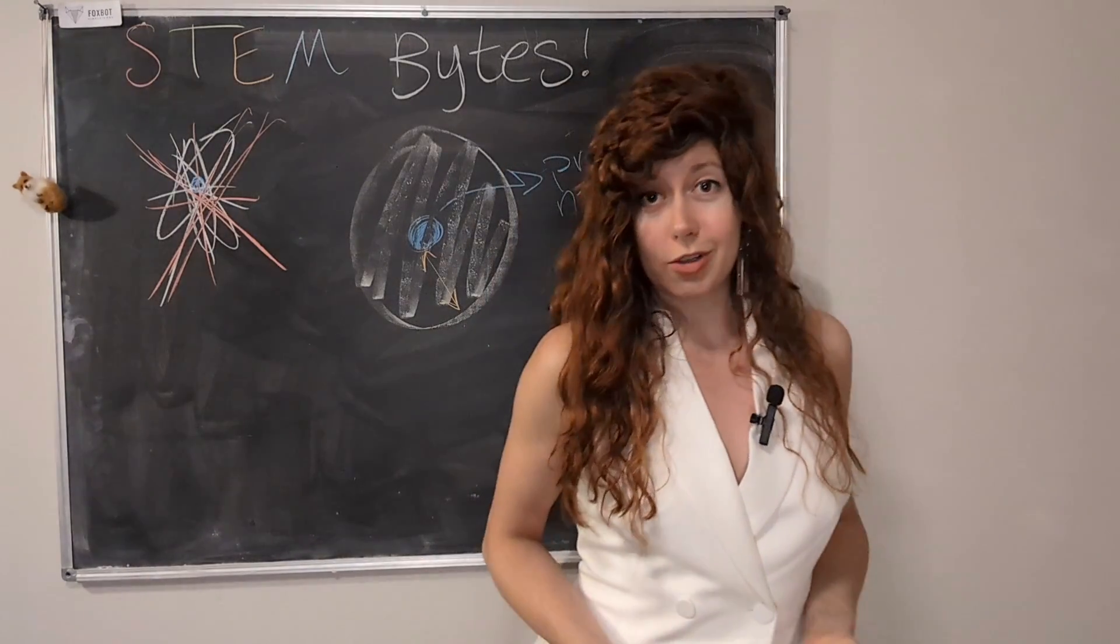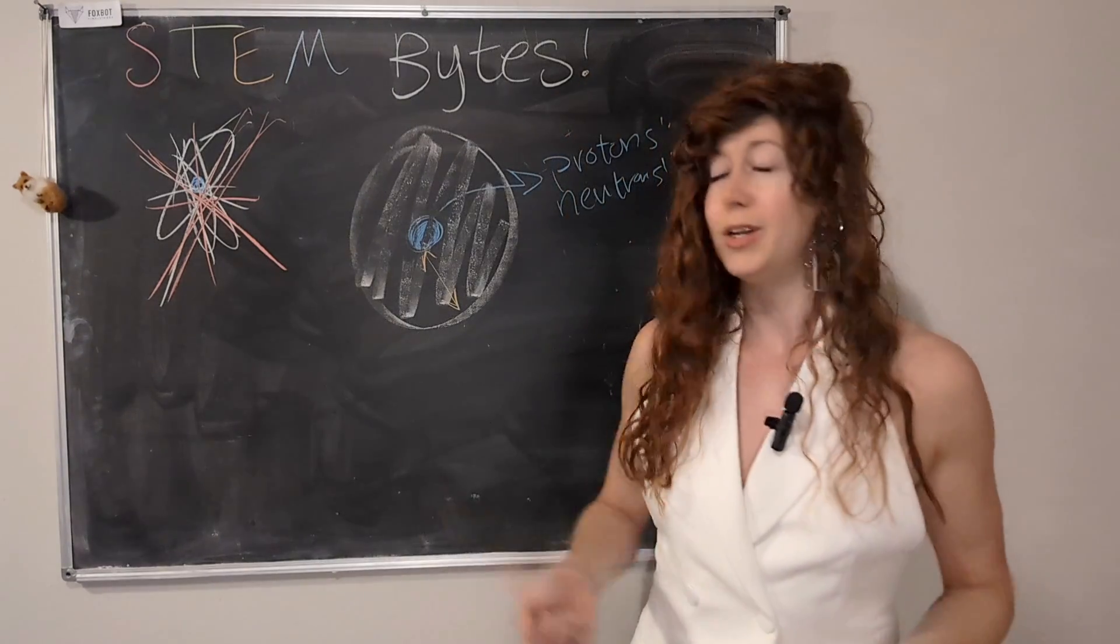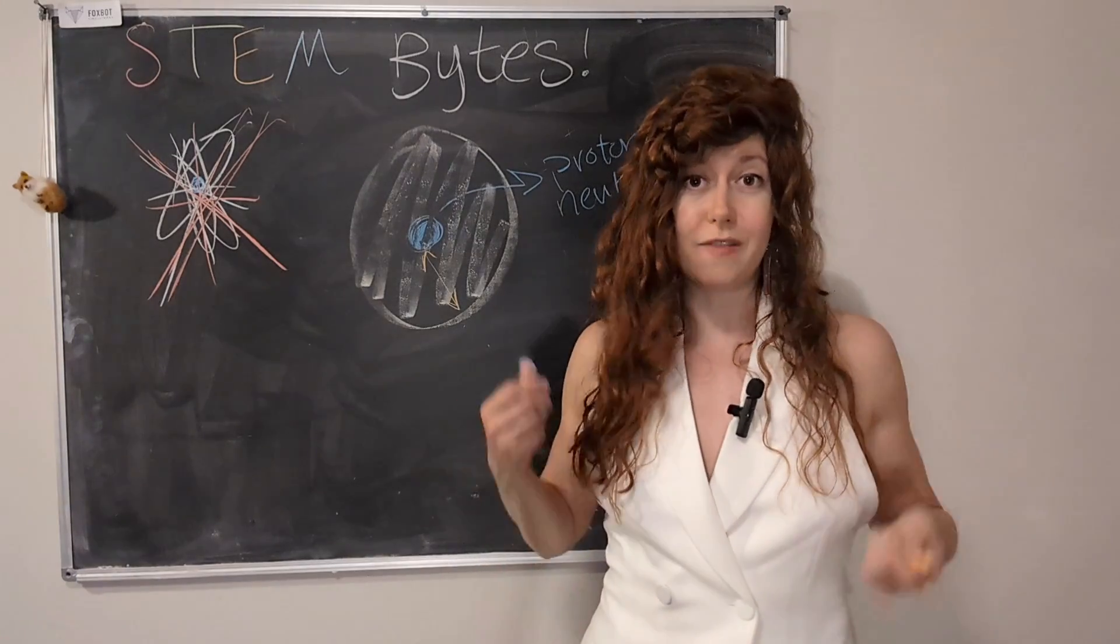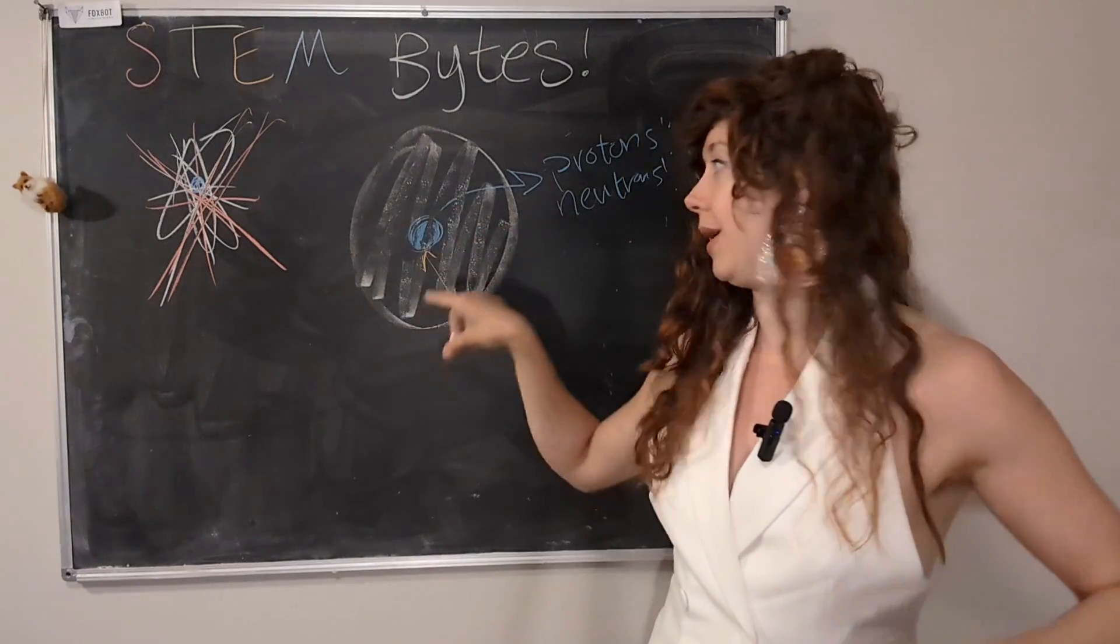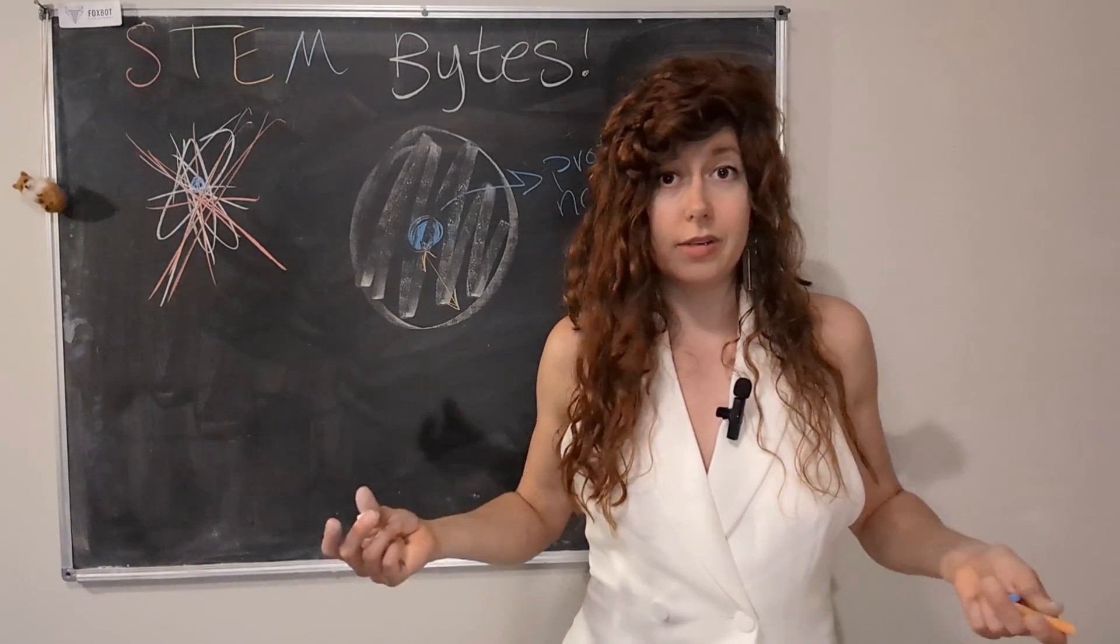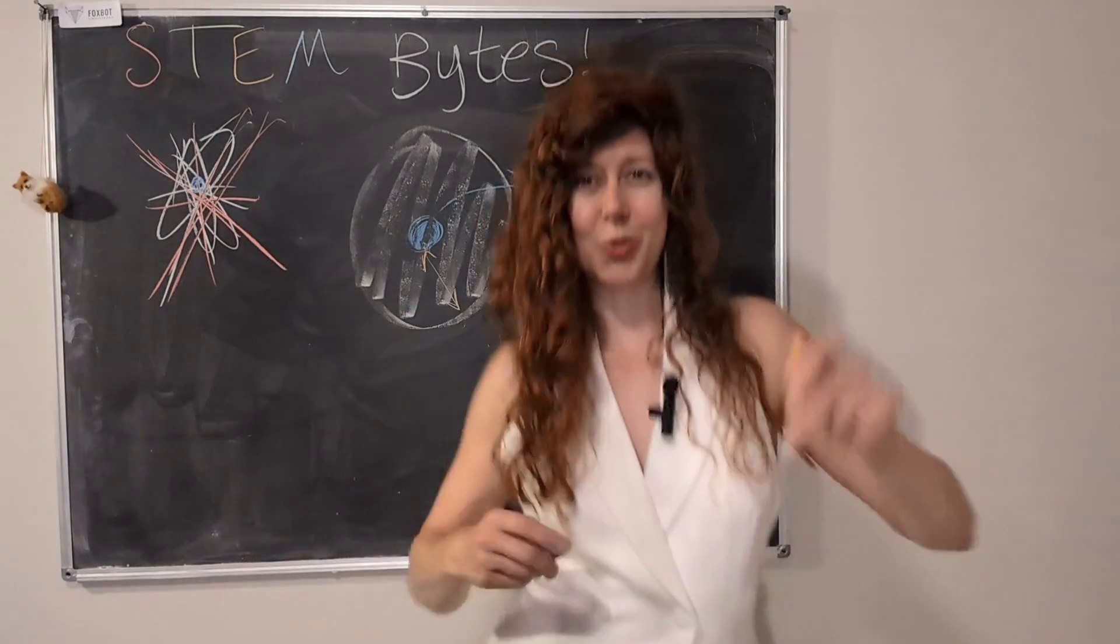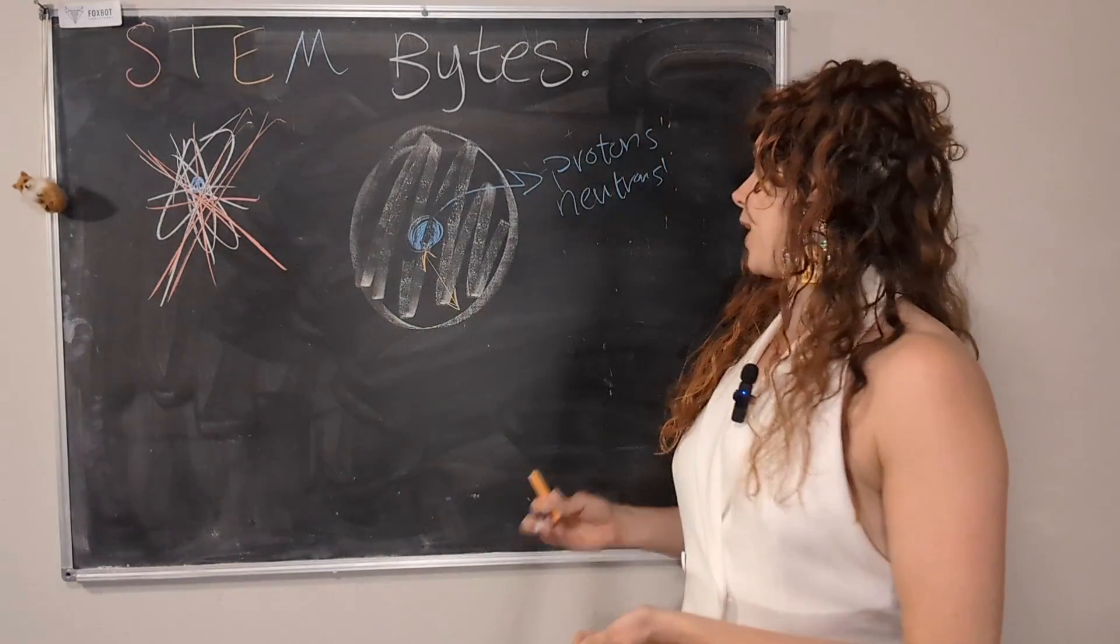So, why is it a cloud? Well, because electrons are funky and weird. I did another video on them because they're like my favorite particle. And it is a cloud because they exist as both a wave and a particle. So, you can't point to any part of the cloud and be like, that's the electron. The whole cloud is the electron. It exists in a wave of probability. Spooky. But fun and really cool and awe-inspiring.